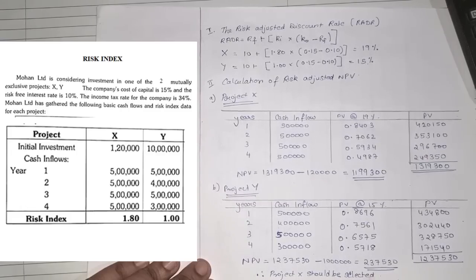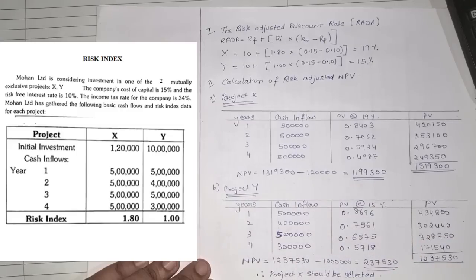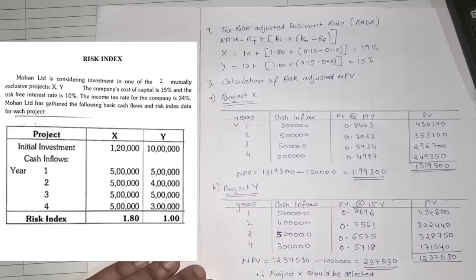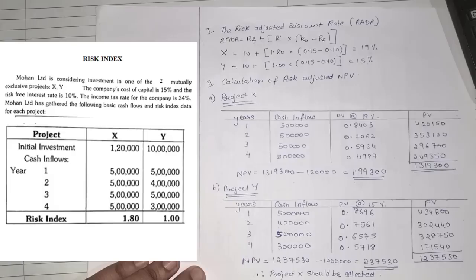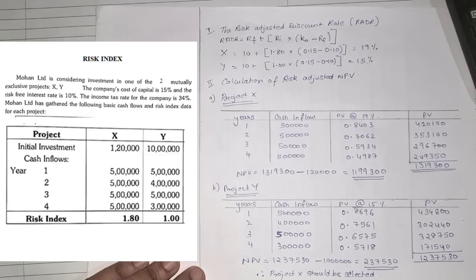Project X should be selected because it has a higher NPV. This is how you solve a sum whenever risk index is given in the question. That was the second type of sum under this chapter. Now we jump to the third type.